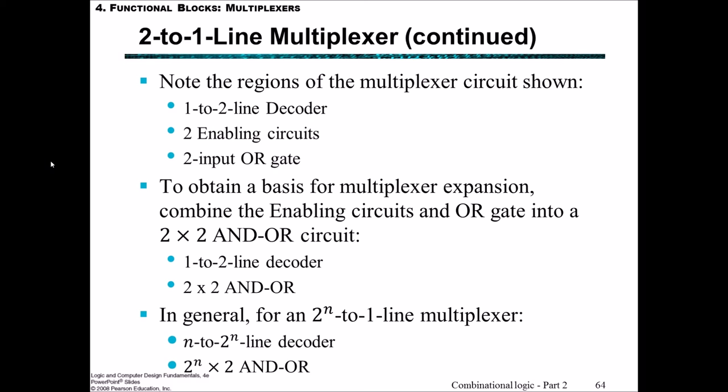So in order to conceptually get a basis for this multiplexer expansion into larger inputs, what we're really doing is we're combining the enabling circuit and the OR gate into a two by two AND-OR circuit. So read this as two AND, two input AND, like this. This is the count of how many of those two input ANDs there are. So in the first case we had two, in general we'll have all the way down to N two input AND gates, and then all of these are combined together in a big OR. So in general for a 2ⁿ to one line multiplexer, we'll need an N to 2ⁿ line decoder, and 2ⁿ two input AND gates, all combined in an OR gate at the end.